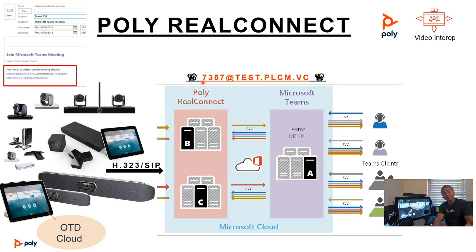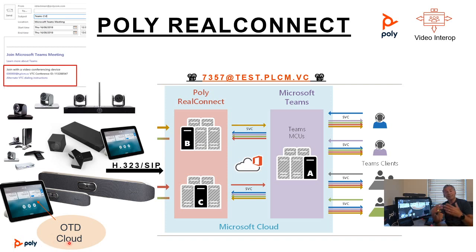If you want to test that, there is a test number available 24 hours a day, which you see right here. So make sure if you do anything or plan to do anything with RealConnect, make sure you can dial this number — you might need a firewall change or something to be able to use H.323 and SIP. Again, OTD and you can add those join buttons, which we'll show you a bit later, and that makes life easy — you just schedule it through Outlook or the Teams client.